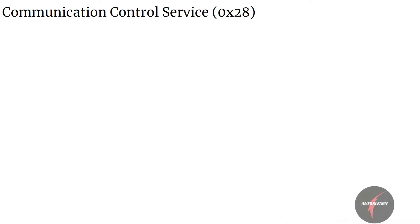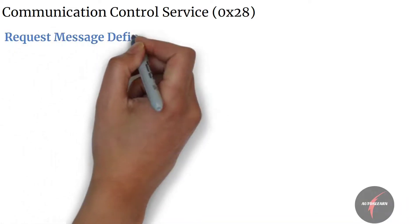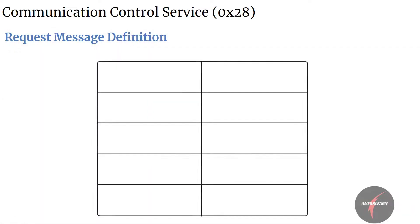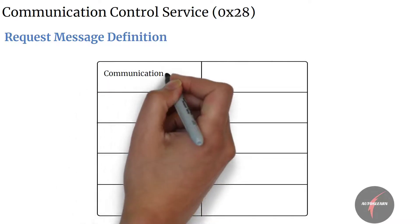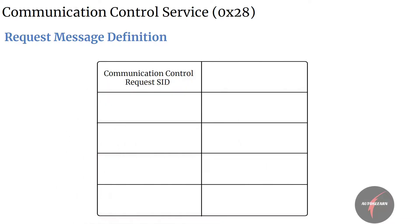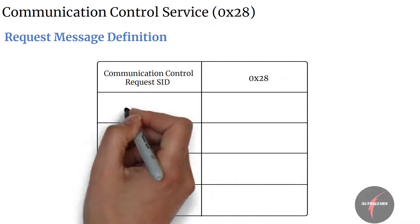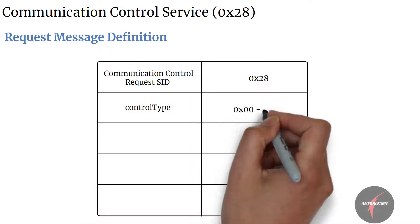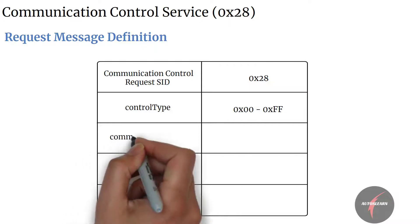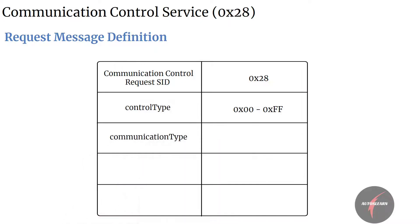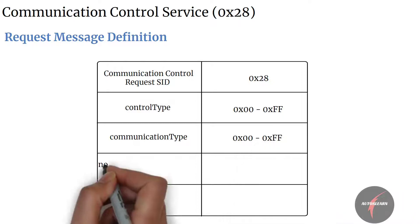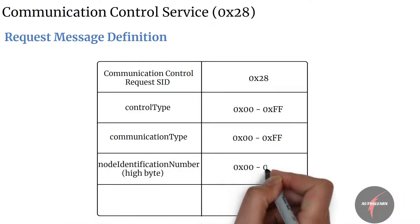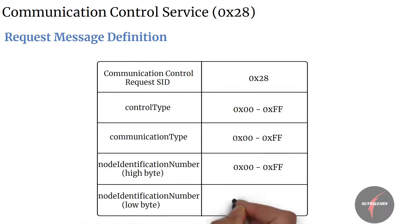With this understanding, let's dive into the request definition of the service. Firstly, we have the communication control request SID which maps to value 28. Then we have the sub-function parameter control type of the service, then we have the communication type parameter, followed by node identification number — its higher and lower bytes.